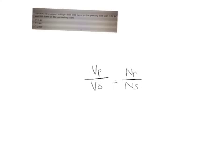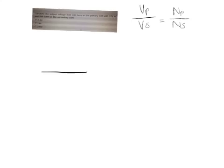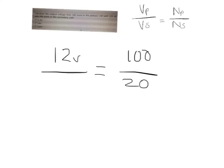Once we've got that, we can put the formula aside and use it as reference. So now we can substitute the numbers in. Looking at the question again, the voltage in the primary coil — our top figure — is 12 volts, and that is equal to the number of coils in the primary, which is 100 turns, divided by the 200 turns from the secondary coil.